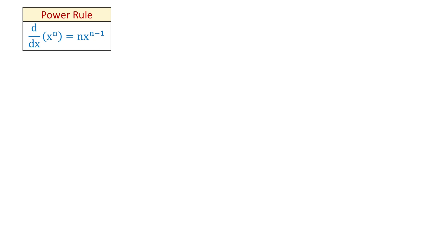For example, if we have a function f of x equals x to the fourth power, then to find the derivative f prime of x, we move 4 in front and decrease the exponent by 1. So the derivative is 4x cubed.